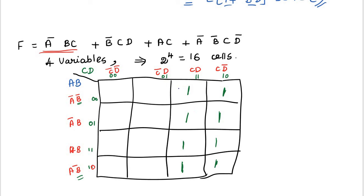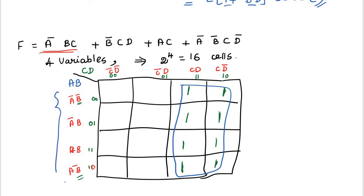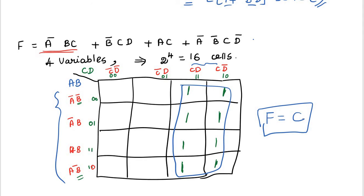Combining all cells: is there any common term? There is no common A or B, but C is common for all. So the minimized logic expression is F = C. This is the way to minimize the logic expression using K-map. Thank you, have a nice day.